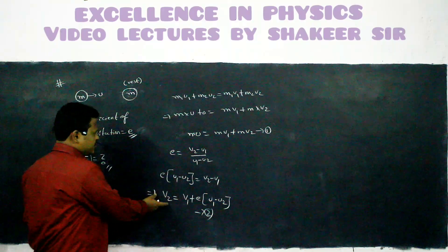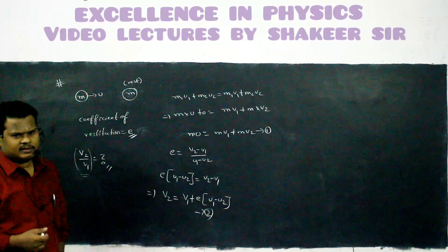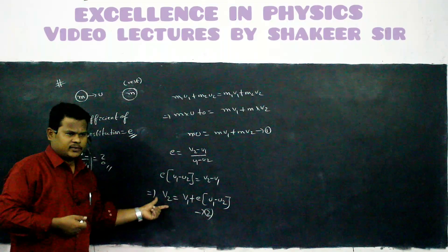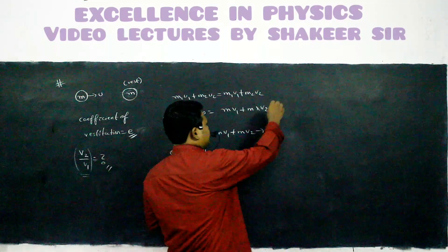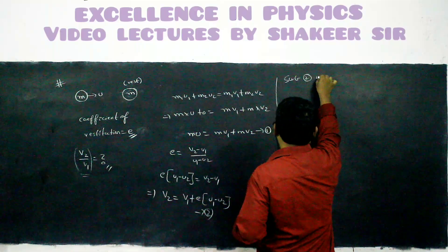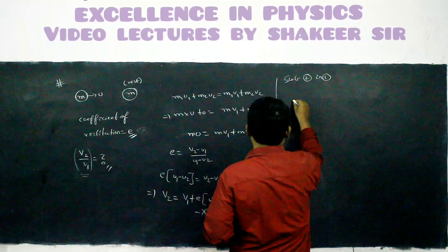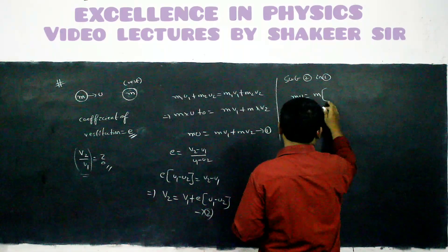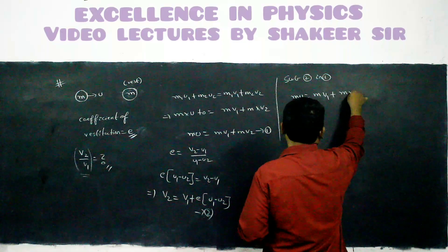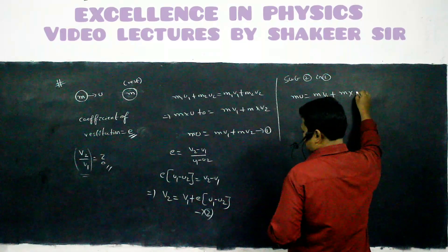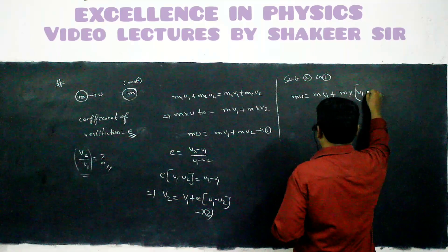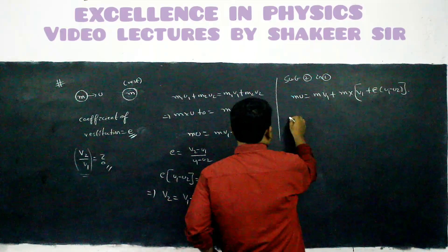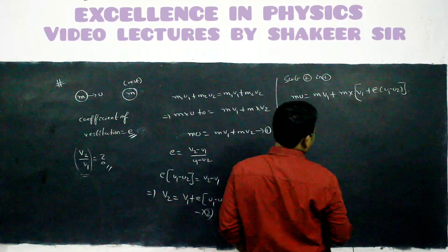If I take equation 2 and substitute in equation number 1, I will get the equation for V1 — because we are trying to eliminate V2. Substituting 2 in 1: MU equals M into V1 plus M into V1 plus E into U1 minus E into U2.